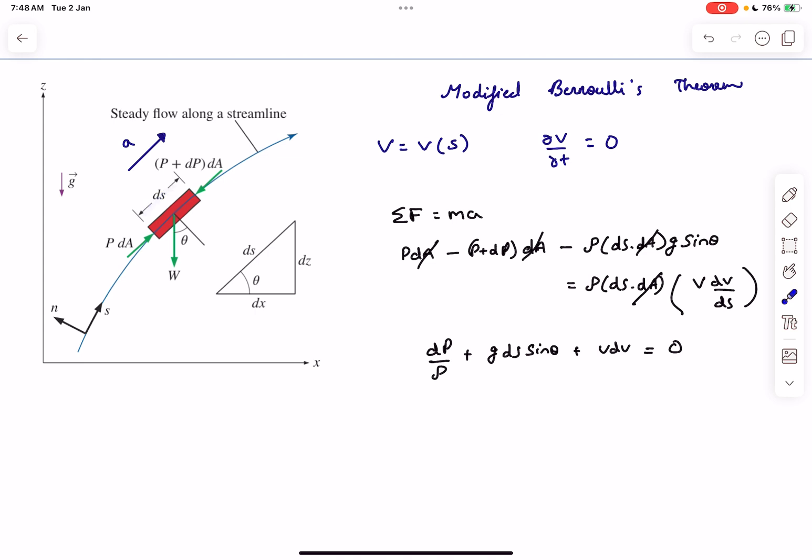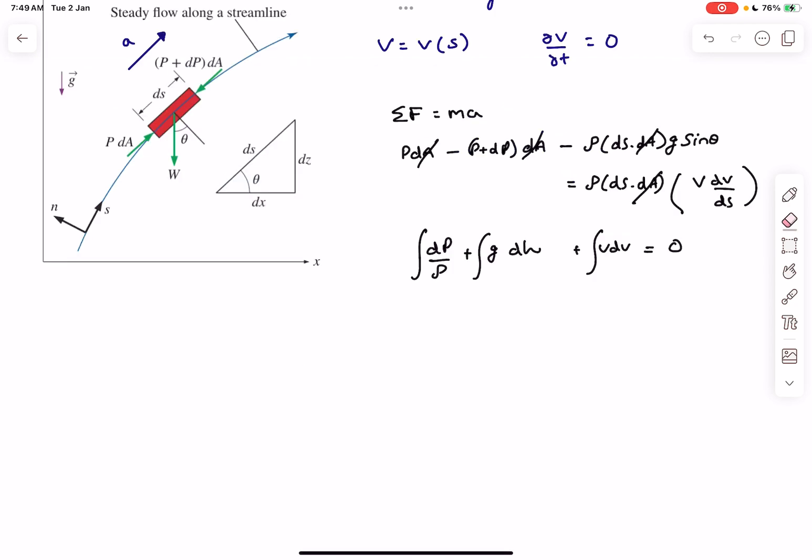Now ds·sin θ is simply dz or let's name it as dh for our case - the vertical height. Now I'm going to integrate this expression. If we assume that the density is variable or the flow is compressible, then we cannot take ρ out of the integral because clearly the density would vary with the pressure and temperature.